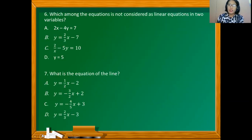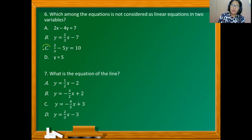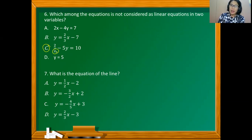Which among the equations is not considered a linear equation in two variables? Option C is not a linear equation in two variables since we do not allow a variable in the denominator, and this one has that. So this is not a linear equation in two variables.